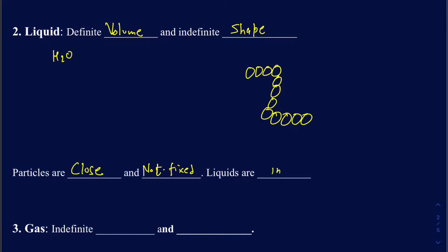Liquids are nearly incompressible. An ideal liquid will not compress — if I put water in a glass, I cannot squeeze it to make a smaller volume because the particles are already close enough to one another. However, you can change the shape by putting them into a different container, because the particles do not have a fixed position and can move around with respect to one another. Liquids have a well-defined volume but no well-defined shape.